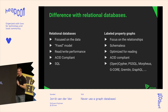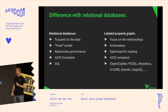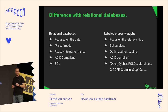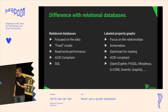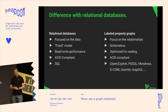A big difference is that relational databases all use the same query language — there are some SQL dialects but the basics are the same. For property graphs, almost every database uses a different query language: Cypher, pgSQL, GSQL, GraphQL — I'll come back to that. I have the most experience with Neo4j so I'll be using Cypher for the demos.